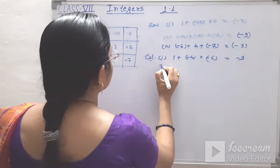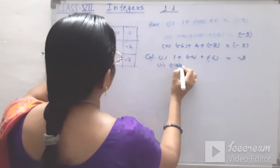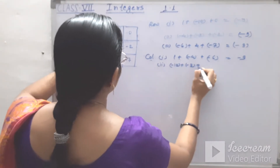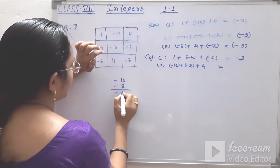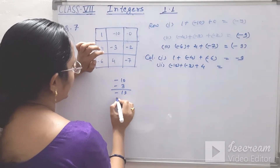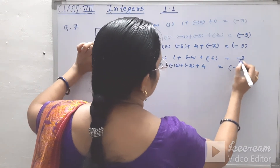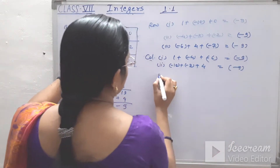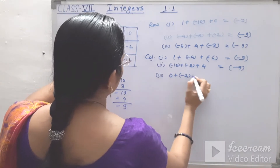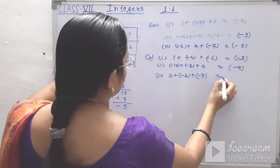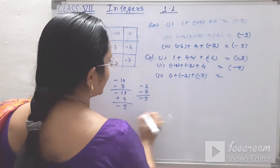Second column: minus 10 plus minus 3 plus 4. Minus 10 and minus 3 gives minus 13, and plus 4 — answer is minus 9. Third column: 0 plus minus 2 plus minus 7. Minus 2 and minus 7 gives minus 9.